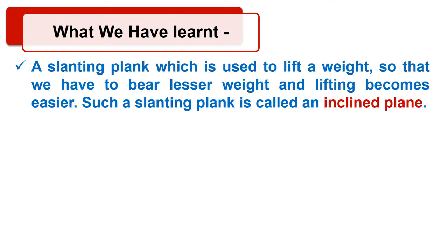In the Part 2 of this chapter, we saw what is an inclined plane and a wedge. A slanting plank which is used to lift a weight, so that we have to bear lesser weight and lifting becomes easier. Such a slanting plank is called an inclined plane.